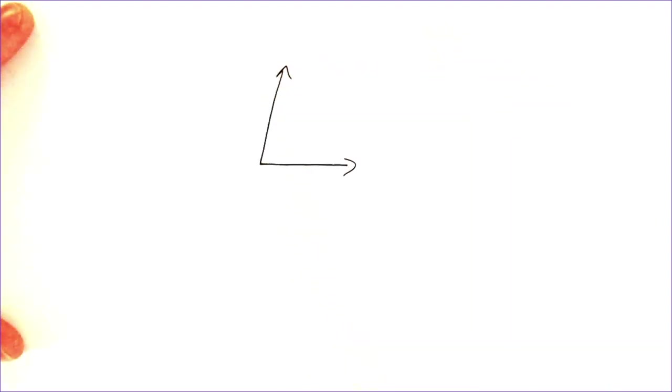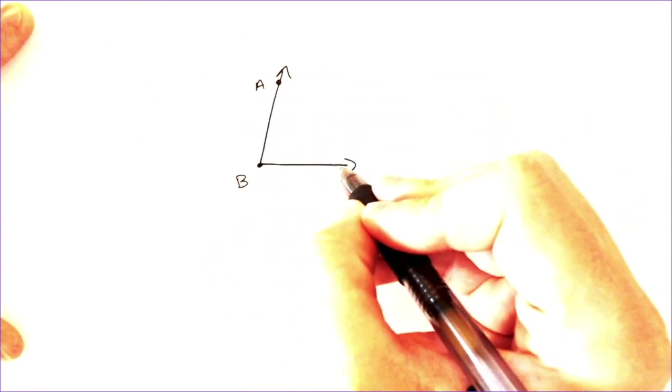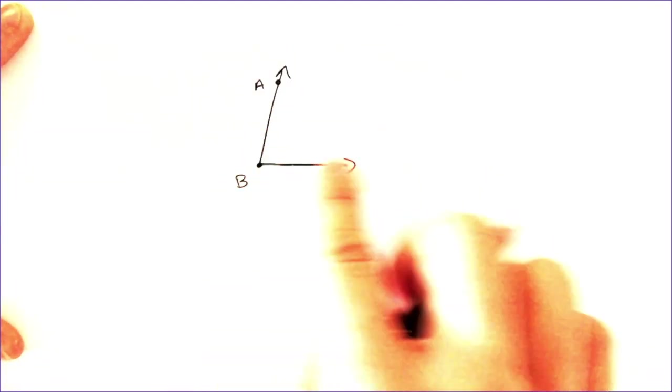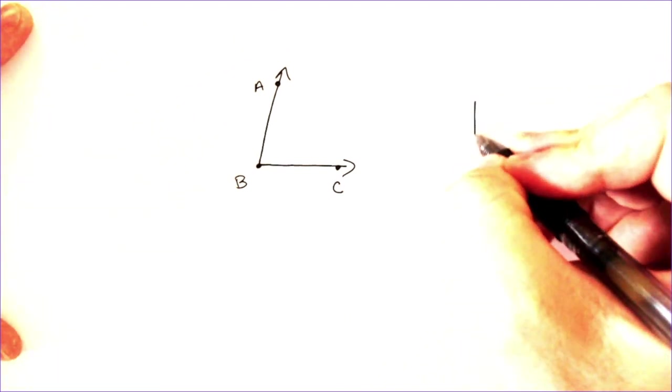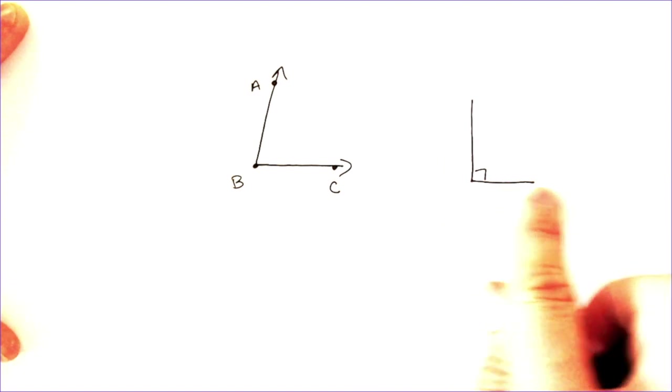To start off with, we're going to draw an angle, like so. And on this angle, I'm going to name it angle ABC. Now, this is an acute angle, meaning it's less than 90 degrees. A 90-degree angle is one that has a right angle in it, and it forms that perfect T or L shape.